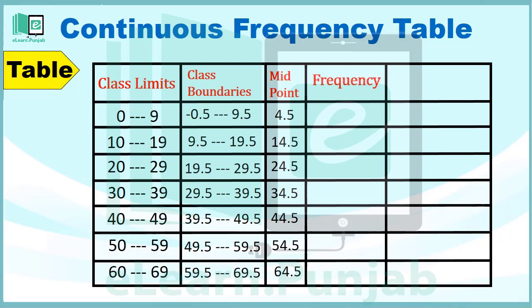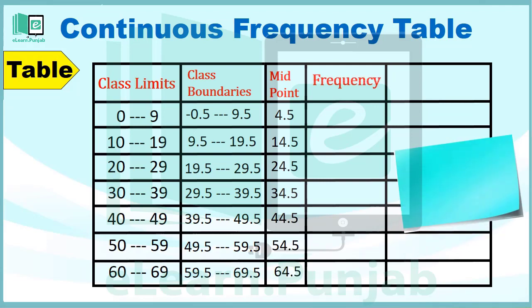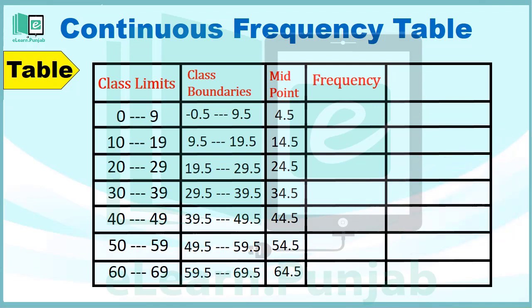اب ہم Next Column Frequency کا بنائیں گے۔ ایک Class Limit میں جتنی Number of Observations آتی ہیں اتنی ہی Frequency ہوتی ہے۔ یہاں Class Limit 0 to 9 میں 2 Observations آئی ہیں تو Frequency بھی 2 ہوگی۔ اسی طرح باقی Class Limits میں آنے والی Observations کی Frequency مالوم کی جائے گی۔